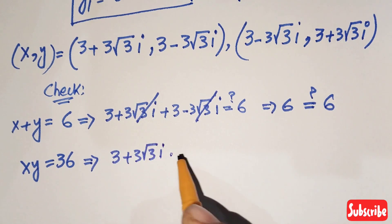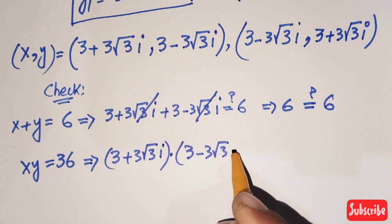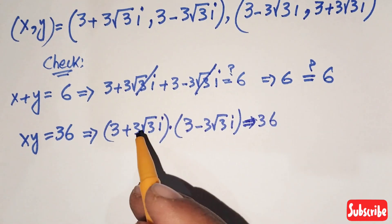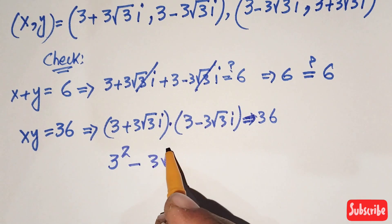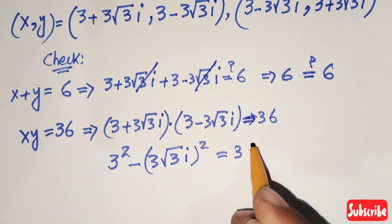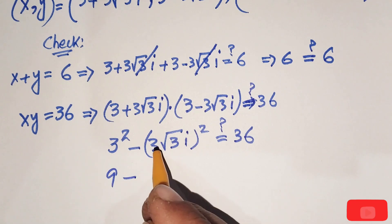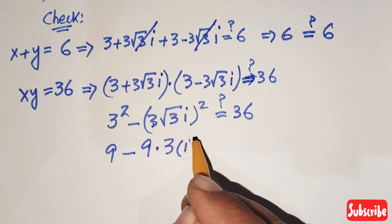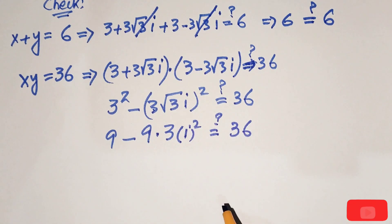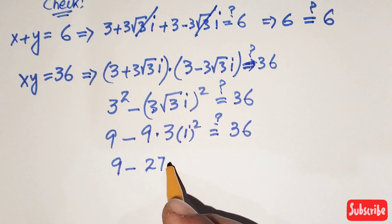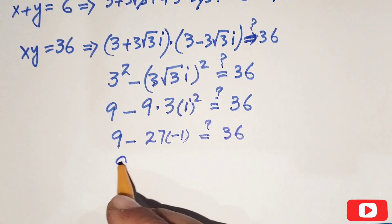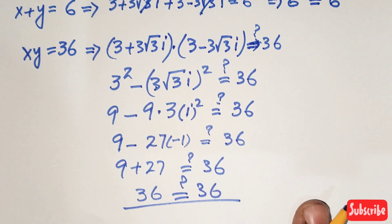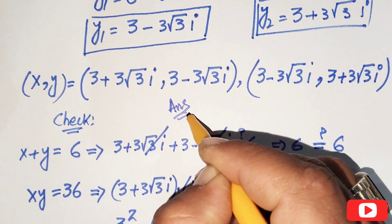Checking the second equation: (3 plus 3 square root of 3 i) times (3 minus 3 square root of 3 i). Using the identity (a+b)(a-b) equals a squared minus b squared, we get 3 squared minus (3 square root of 3 i) squared, which is 9 minus 9 times 3 times i squared. Since i squared equals minus 1, we get 9 minus 27 times minus 1, which is 9 plus 27 equals 36. Left-hand side equals right-hand side, confirming our answer.